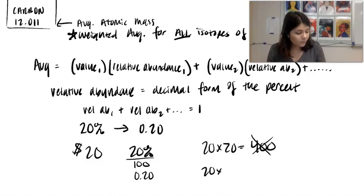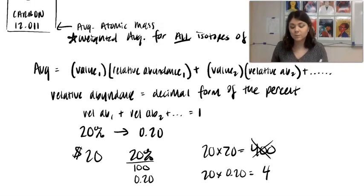Well, you don't just do 20 times 20 because that's 400. That does not make sense. So what you do is you take this into the relative abundance, 0.20. So now when you do the math, 20 times 0.20, it ends up being $4 tip.